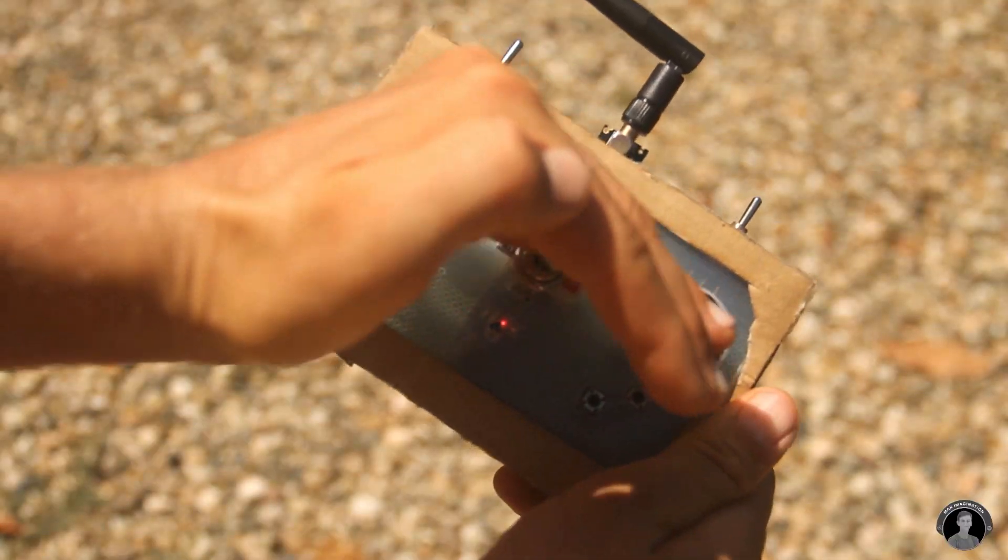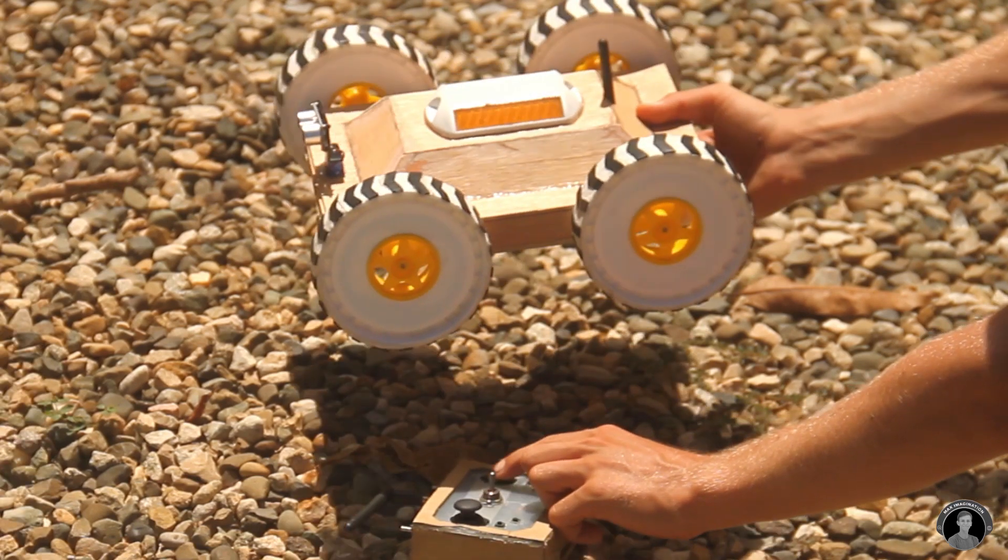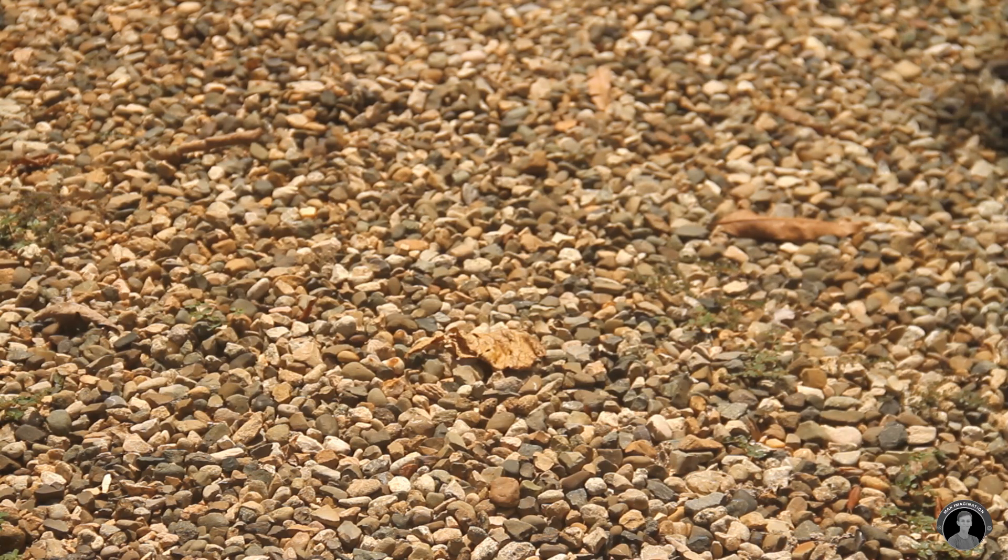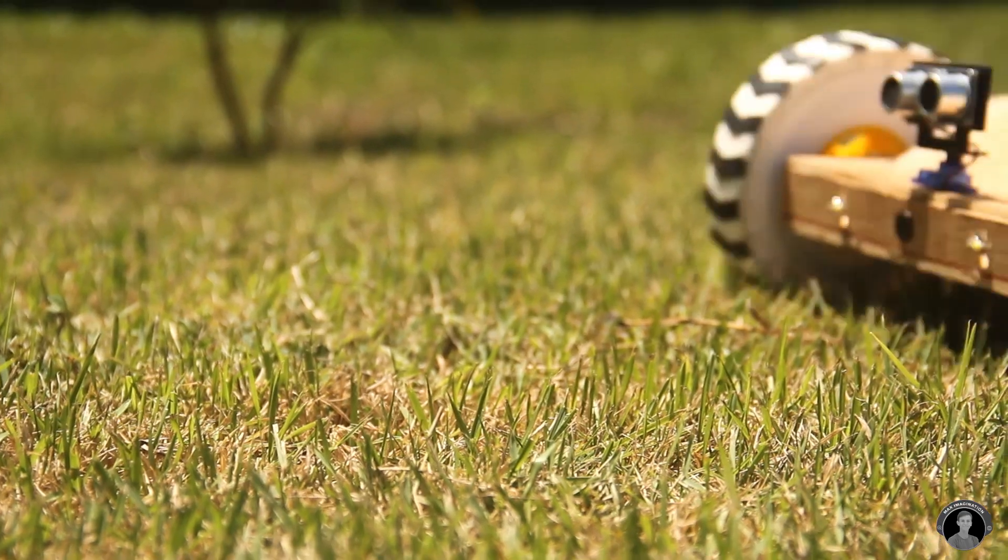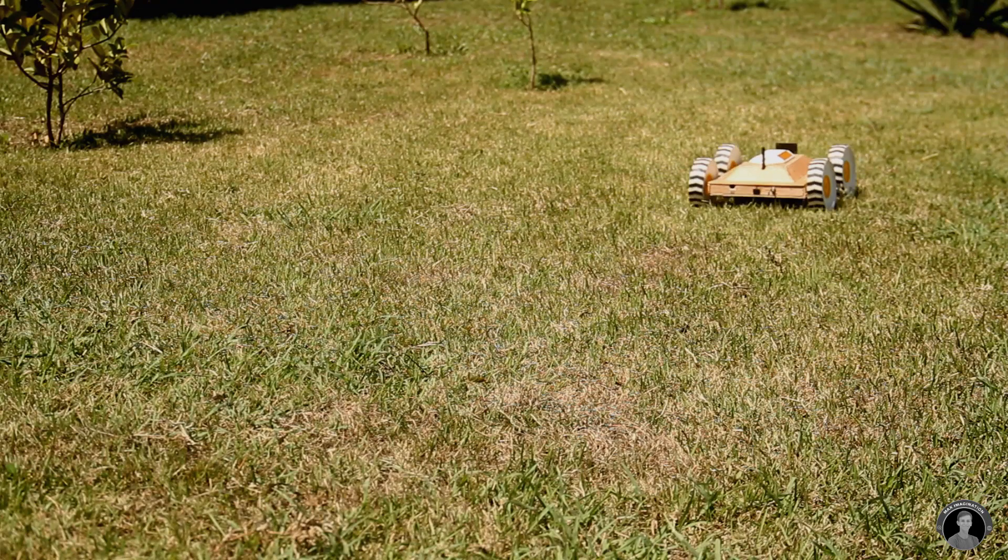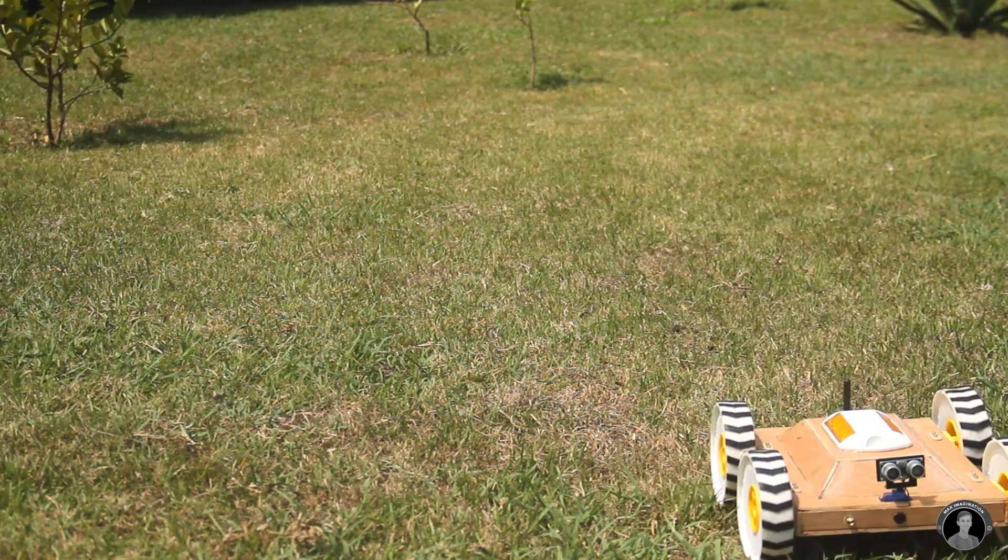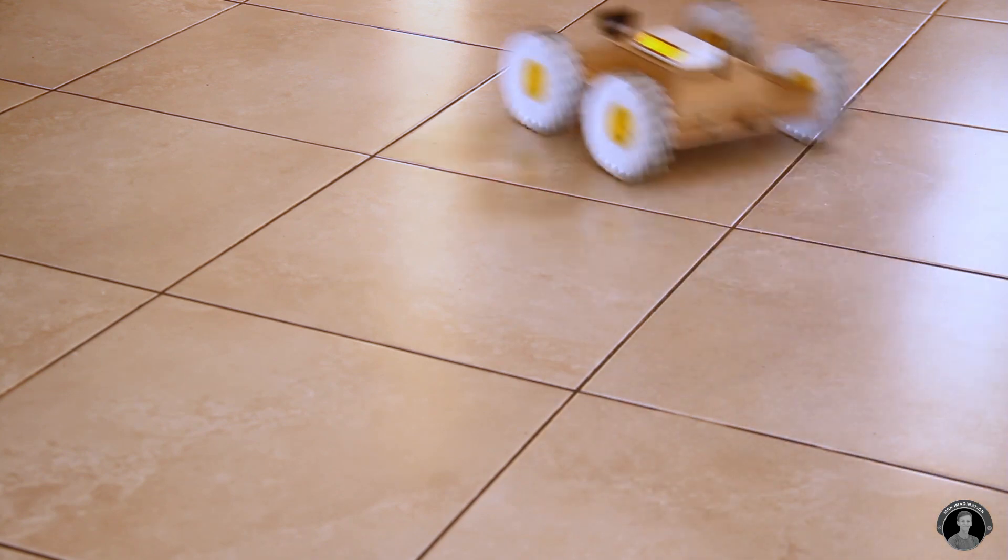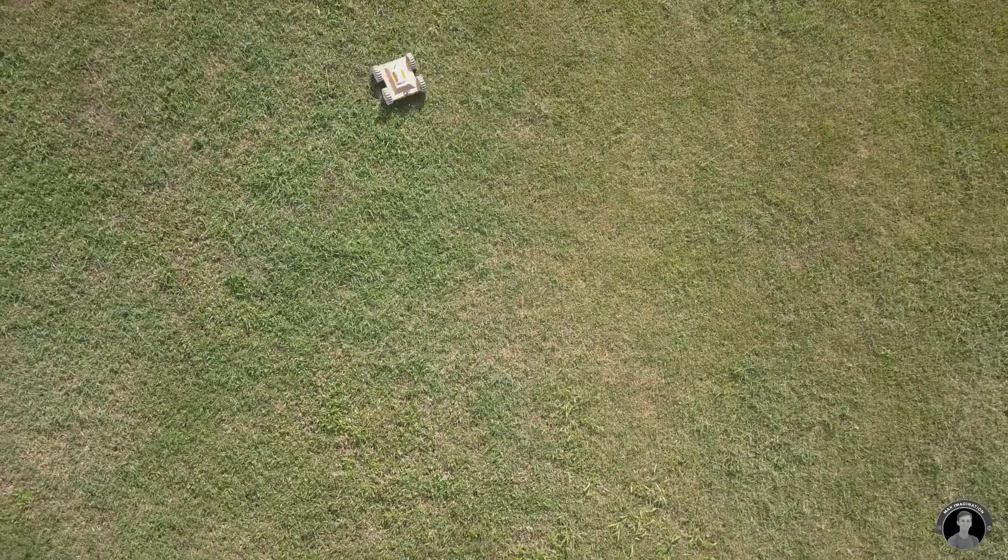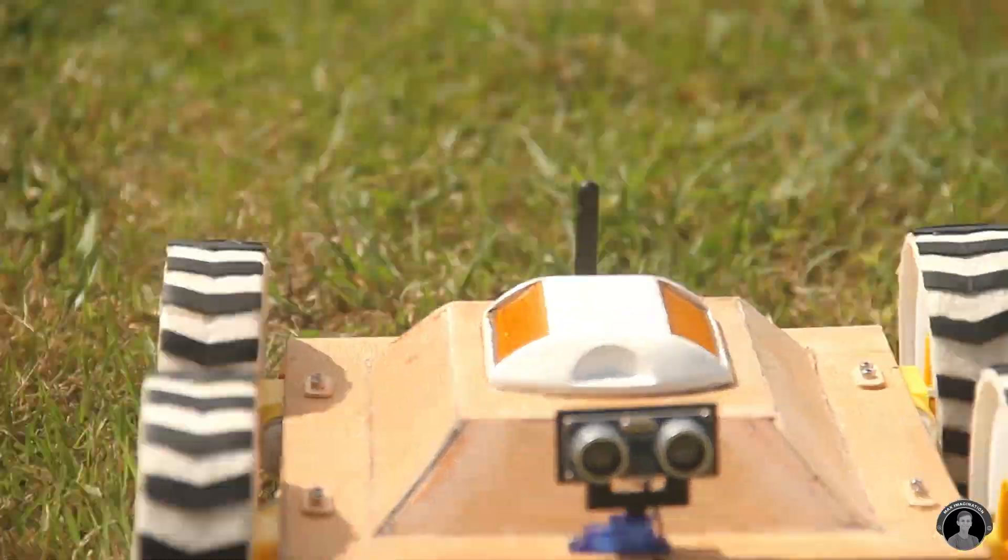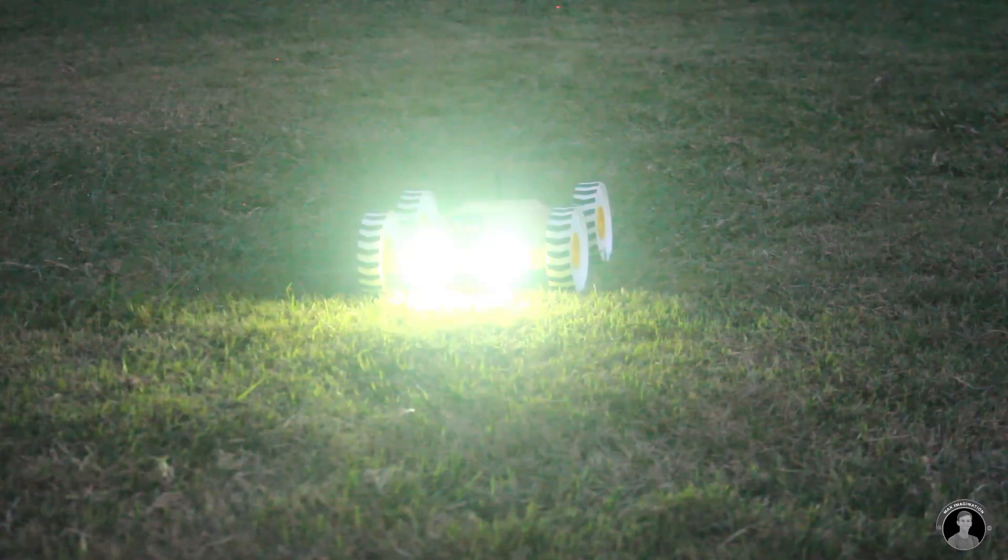So switching the transmitter and rover on, there isn't any kind of special pairing involved, they automatically connect to each other, allowing you to get straight into action. The left joystick on the transmitter makes the rover move forwards and backwards, and the right joystick makes the rover turn, though to make a proper turn it's best to combine the movement of both joysticks. And the toggle switch on the left hand side of the transmitter toggles the headlights of the rover on and off.